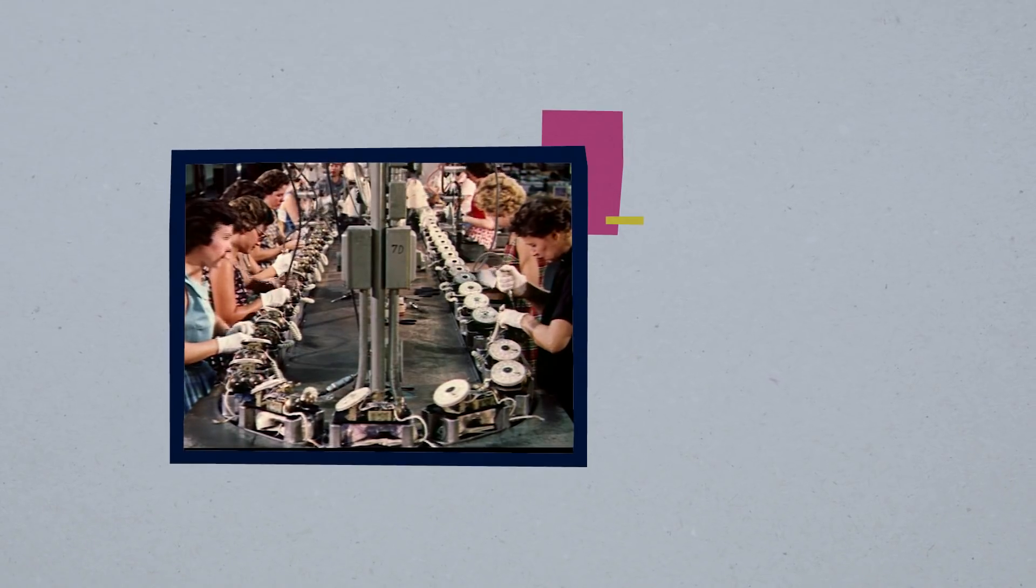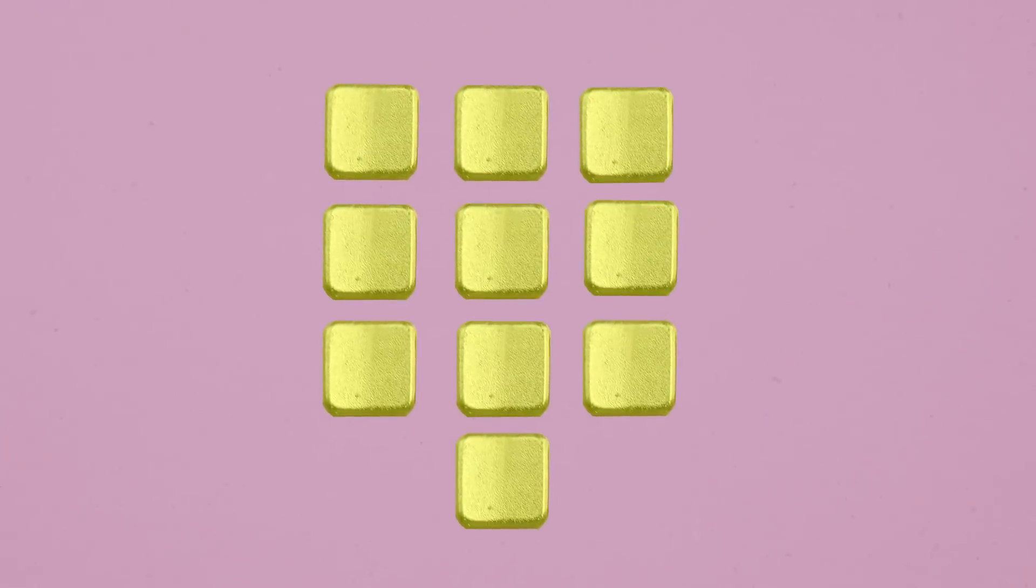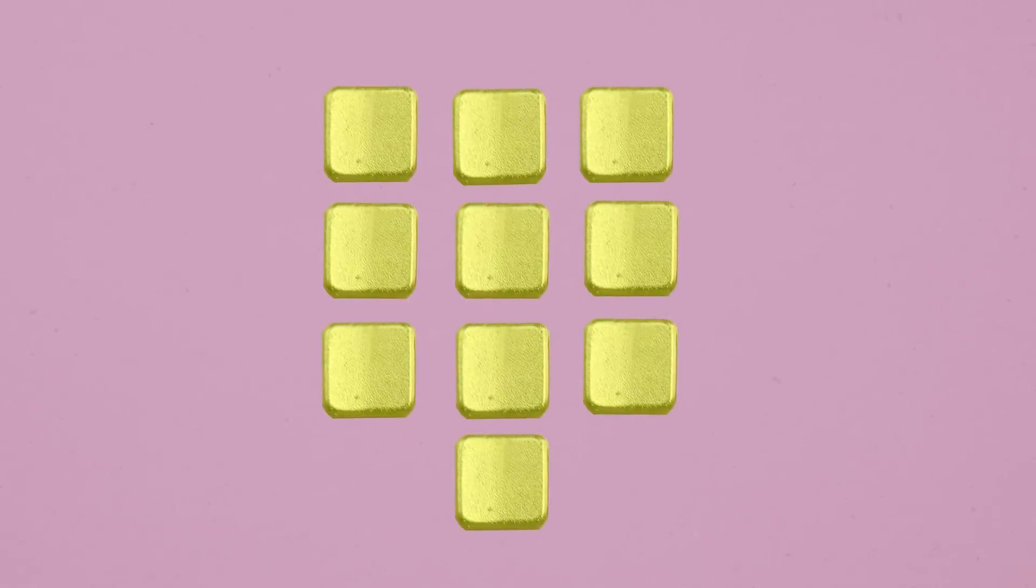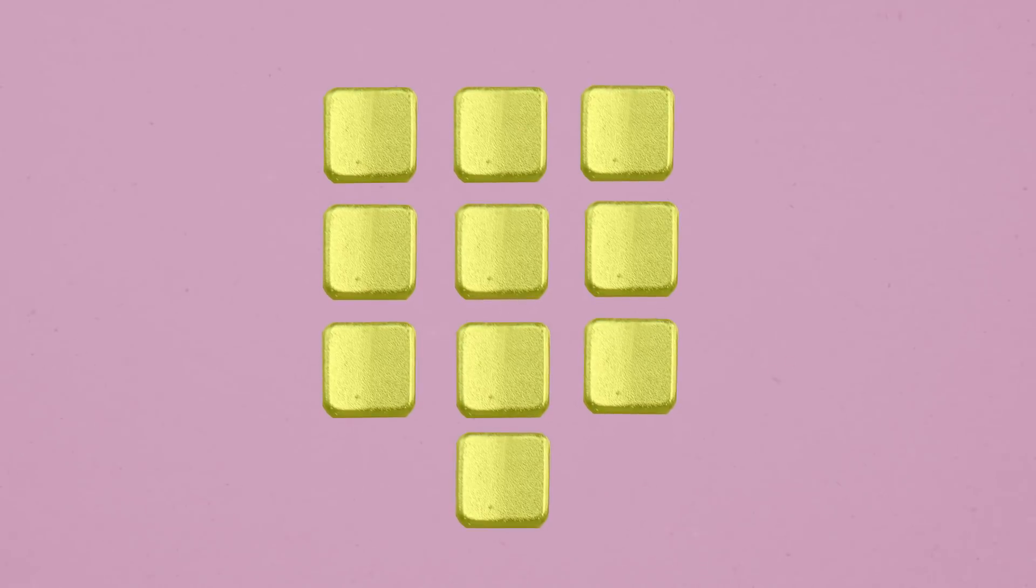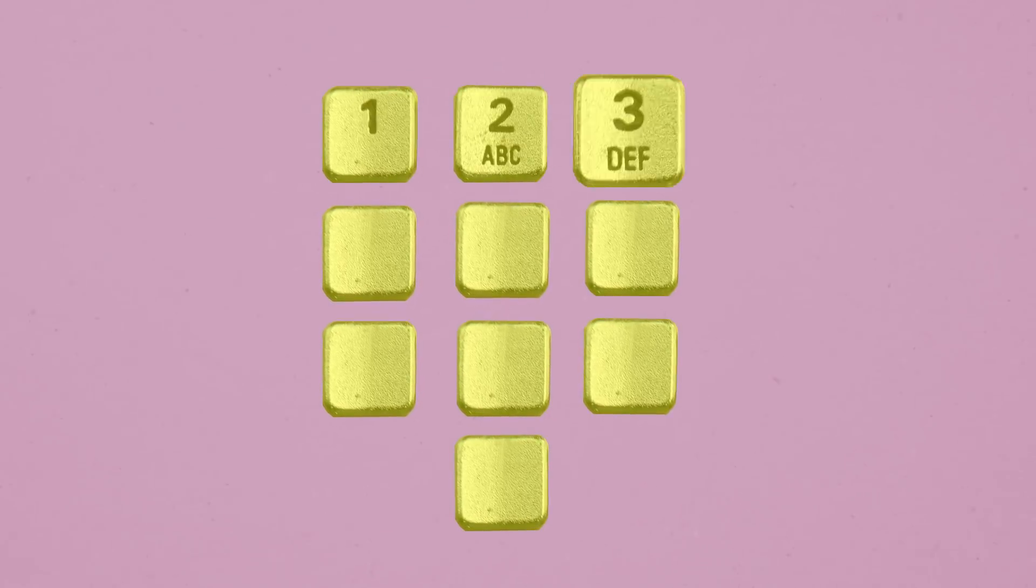So why not use the standard calculator layout that already existed? Well, researchers also gave the testers a blank 4x3 grid and asked them to number the spaces 1 through 9. And overwhelmingly, they arranged them like this.